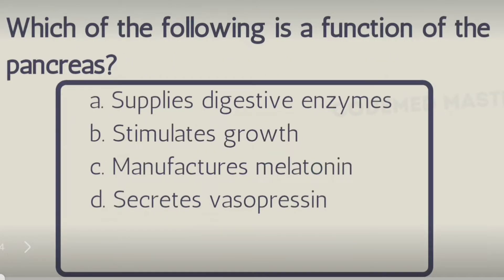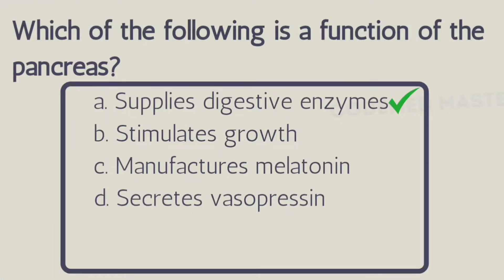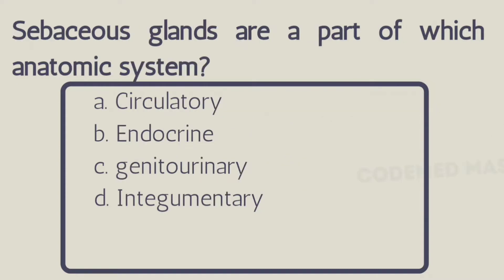Next question: which of the following is the function of the pancreas? Option A: supplies digestive enzymes, Option B: stimulates growth, Option C: manufactures melatonin, Option D: secretes vasopressin. The right answer is Option A, supplies digestive enzymes. The pancreas produces enzymes that help to digest food, particularly protein.